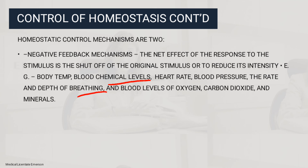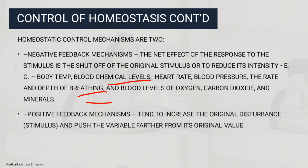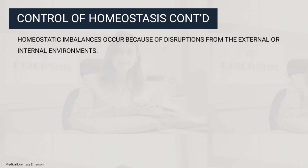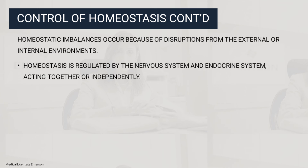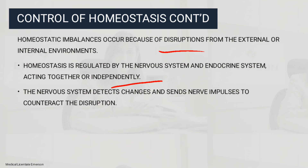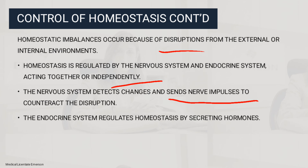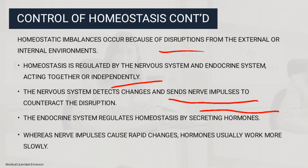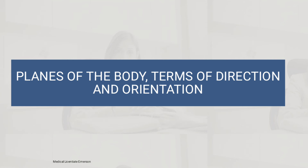Negative feedback is when the net effect of the response shuts off the original stimulus or reduces its intensity — examples include body temperature, blood pressure, and the rate and depth of breathing, as well as blood levels of oxygen, carbon dioxide, and minerals. Positive feedback tends to increase the original stimulus and push the variable further away from its original value. The nervous system detects changes and sends nerve impulses to counteract disruption, while the endocrine system regulates homeostasis by secreting hormones; nerve impulses cause rapid changes whereas hormones usually work more slowly.